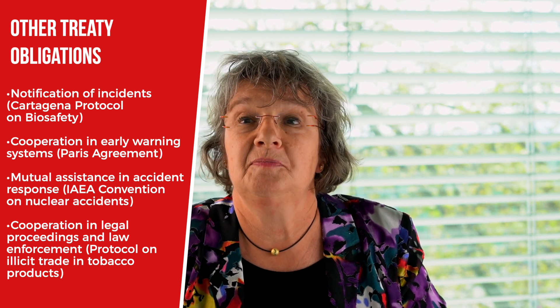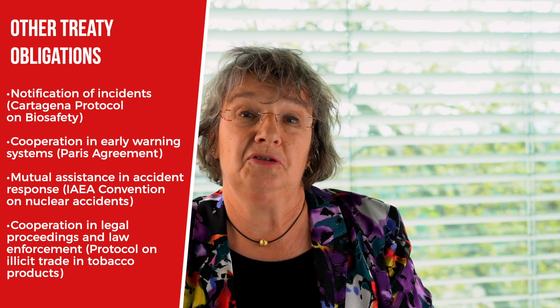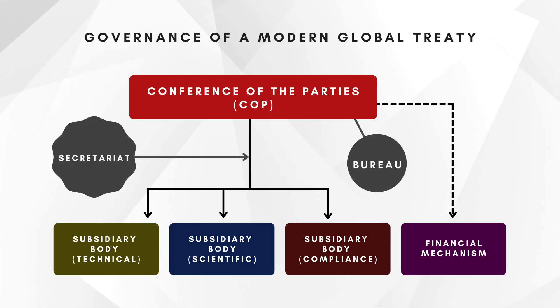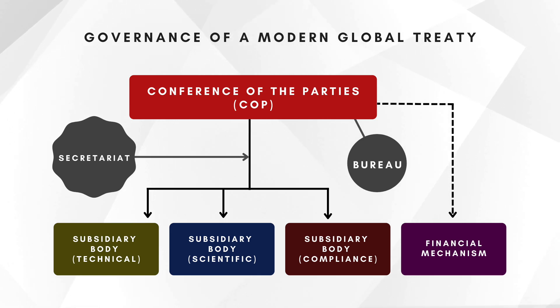Turning to the institutions of a treaty: modern global treaties are no longer simply a piece of paper with obligations of states written on them. There is actually a whole institutional infrastructure designed to make the treaty work. This differs from one treaty to the next, but a fairly typical example would be the one shown on the slide.